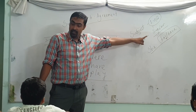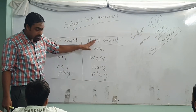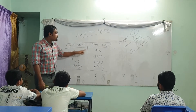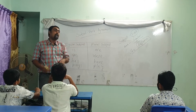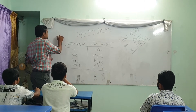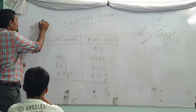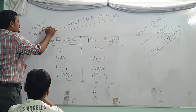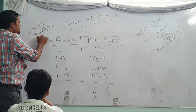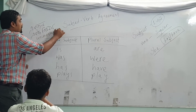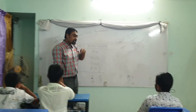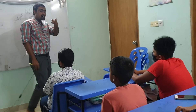The verb depends on the subject — that's the key point of subject-verb agreement. Now, uncountable nouns: for example, water, rice, oil — these are uncountable nouns.